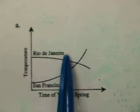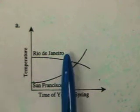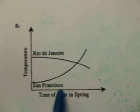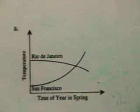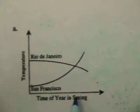In this particular graph, they are given us two cities, Rio de Janeiro which is in Brazil in South America, so they have seasons opposite ours, and San Francisco. I made one change in class. I said instead of time of year in spring, I said maybe we will change this to the months of March through the months of May, because that will work better for the seasons in the two places.